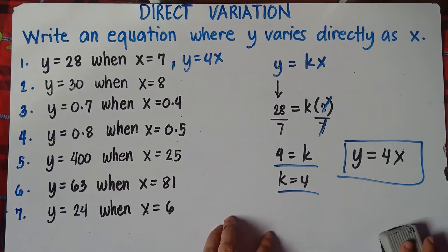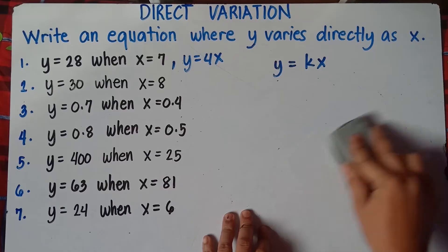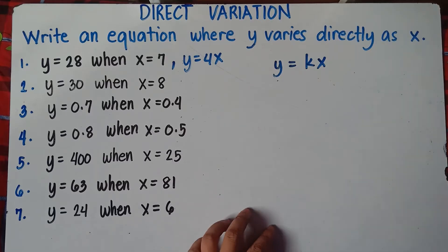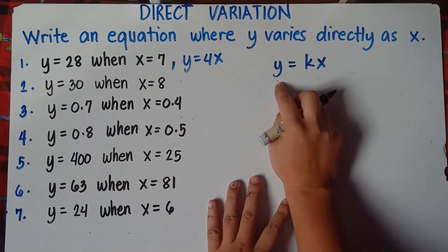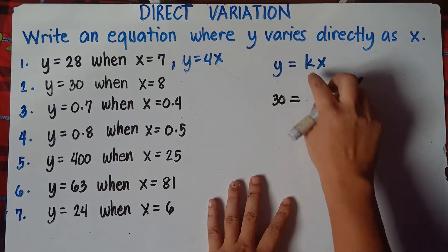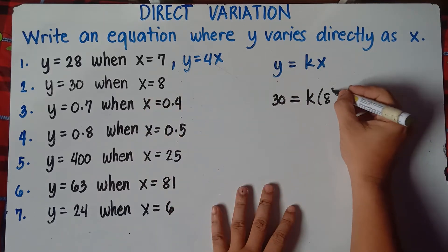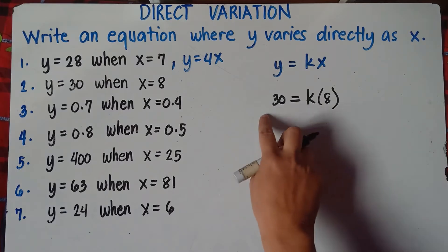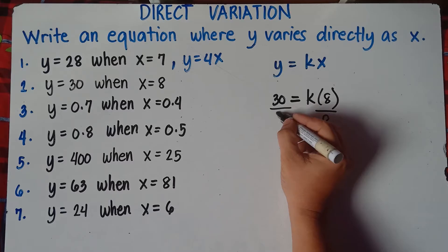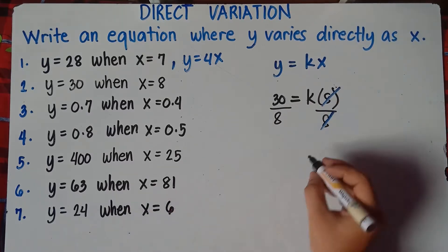So let's try number 2. That's how you find the equation — find k, and once you get k, simply substitute k from this given equation, y varies directly as x. Our y is 30, so this will be 30 equals k times x, where x is 8. To get the value of k, divide both sides by 8 so the remaining equation on the right will be k.